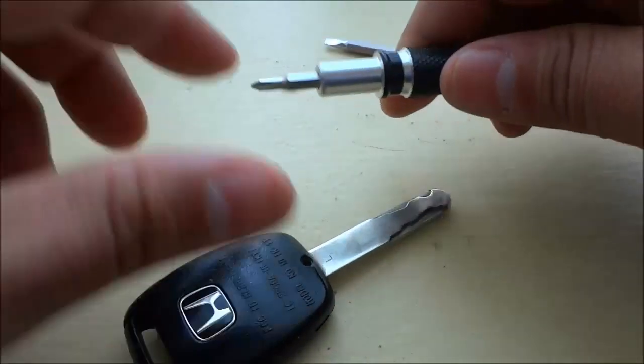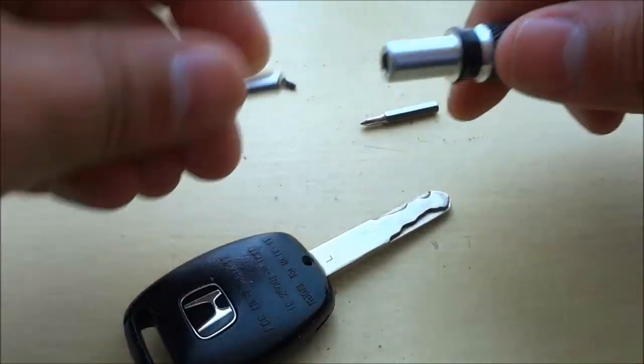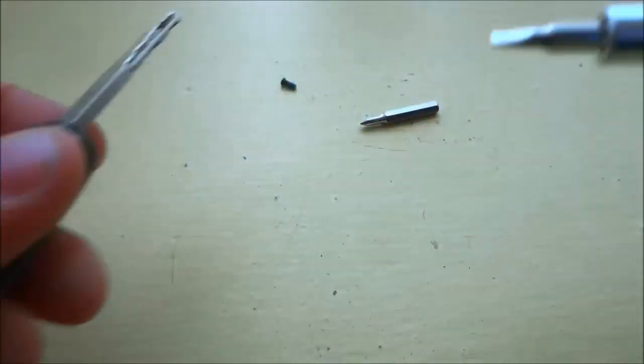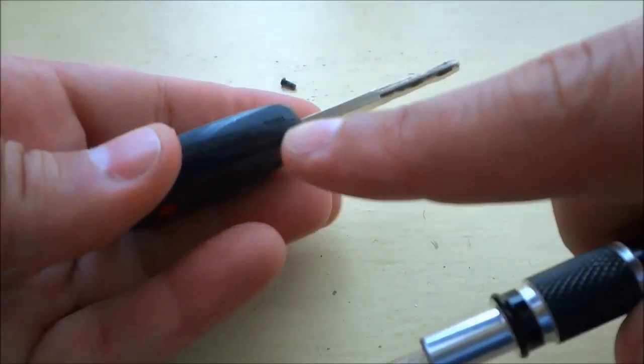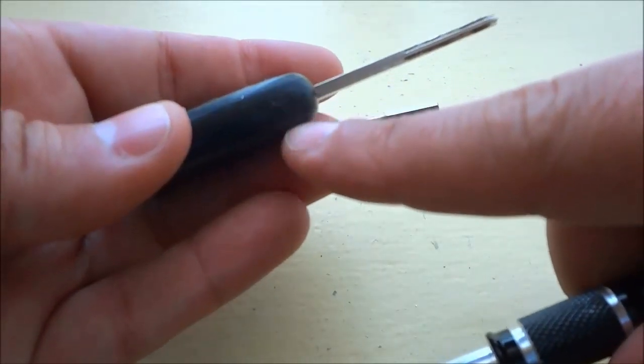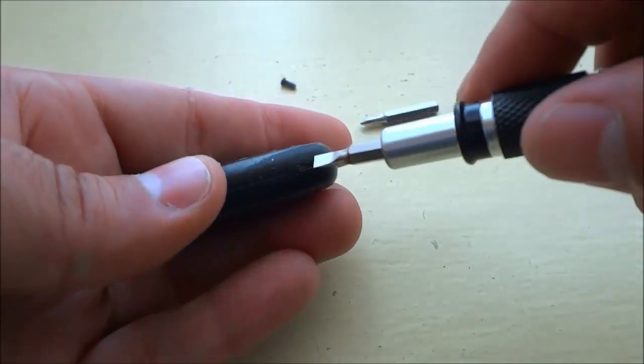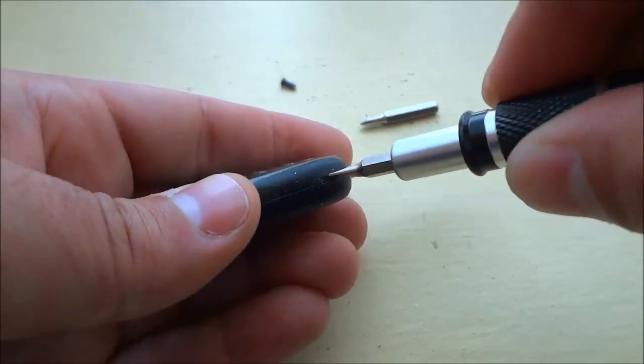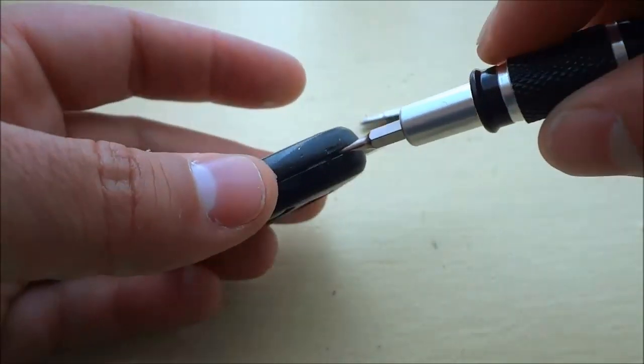I'll just leave it over there. Then I'm going to switch to a flathead screwdriver bit and I'm going to put that flathead right in that little spot right there and twist it. That will pry apart both ends of the case for the key fob.